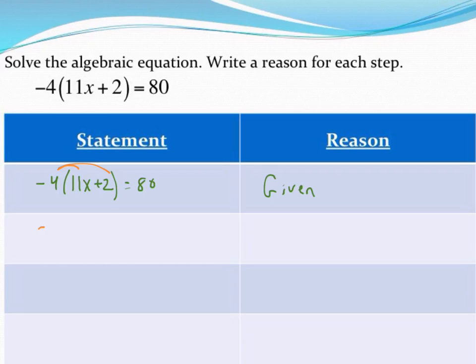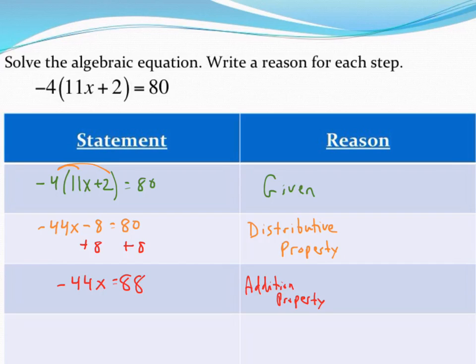Next up I have that negative 4 outside parentheses so I'm going to go ahead and distribute the negative 4 and my reason that I know that step is true is because of the distributive property. As I continue to solve this equation I have negative 44x minus 8 equals 80 so I'll add 8 to both sides. Because I added I'm going to call this the addition property and finally to get rid of the negative 44 that's being divided by x, divide both sides by negative 44 so I get my final answer. My reason that I know that final answer is true is because of the division property.